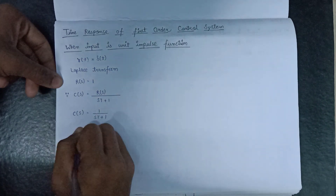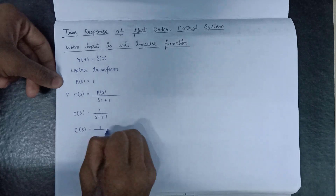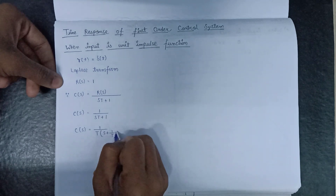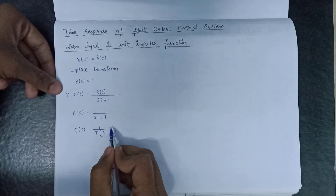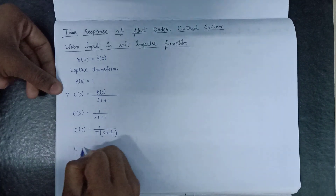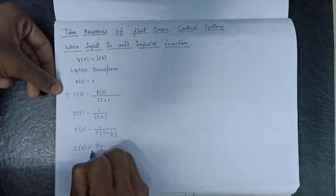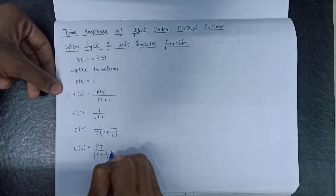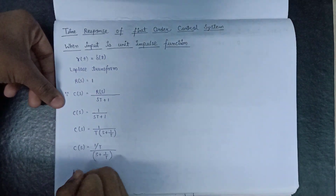Now taking T as a common factor from the denominator, we get C of s equals to 1 over T times s plus 1 over T. This whole term of C of s can also be written as C of s equal to 1 over T in the numerator and s plus 1 over T in the denominator part.